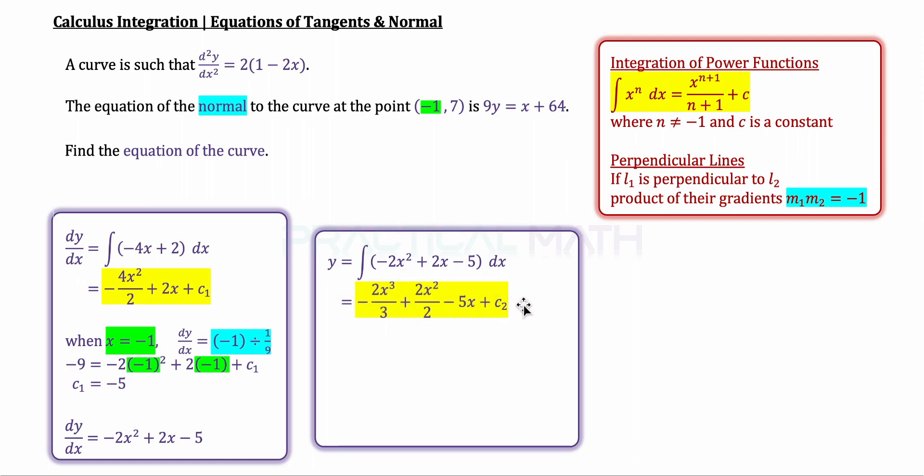Now, with that in mind, we can now replace this pair of coordinates, which is x to be -1 highlighted in green, as well as y to be 7 in order to solve for c₂. So, substituting inside to solve for c₂ should give us 1/3.